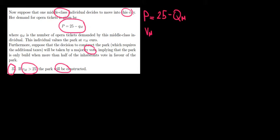So when he would not pay the tax, the price would be equal to the marginal cost. So the price would be 25 minus the quantity and the marginal cost for the opera ticket is equal to 20.